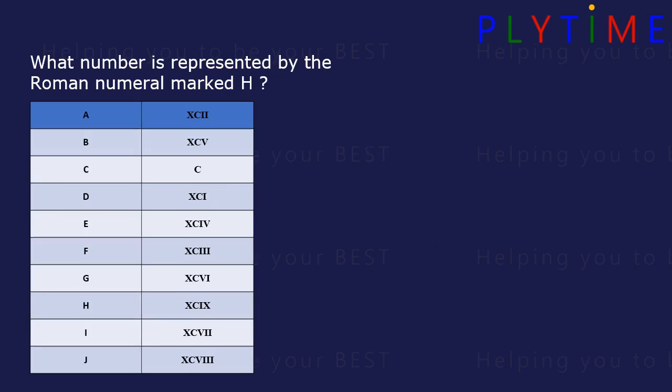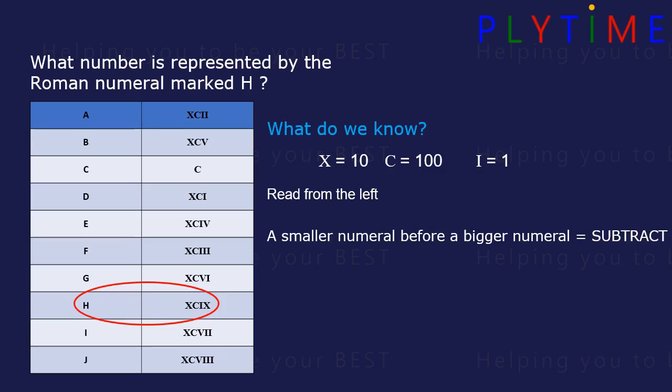What number is represented by the numeral XCIX? X is 10, C is 100, and I is 1. Reading from the left, XC is a small numeral before a bigger numeral, which means subtract. XC is 100 minus 10, which is 90. IX is 10 minus 1, which is 9. So 90 plus 9 equals 99.